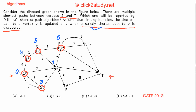From E, we can reach G at a distance of 8, and we can also reach T at a distance of 6 + 4 = 10. So T is now reachable at distance 10 via E.